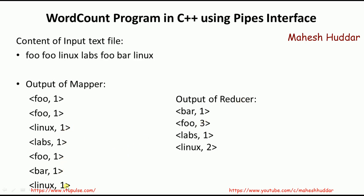Similarly, linux is coming two times, so the values of linux will be added and the output will be linux 2. So the input to the mapper is the textual file, the output of the mapper is a series of key-value pairs where the key is the word and value is 1, and these are the inputs to the reducer. The reducer takes the key-value pairs, adds the values for repeated keys, and emits the result as key-value pairs again.